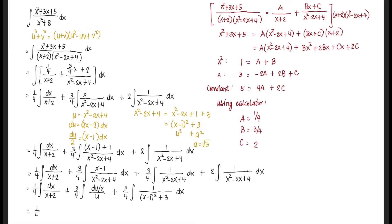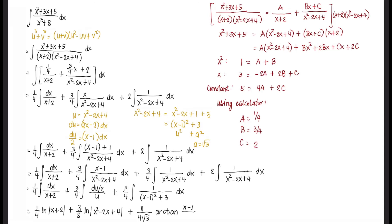Integrating, that gives one-fourth ln|x plus 2| plus three-eighths ln|x squared minus 2x plus 4| plus eleven over four square root of 3 times arctan of (x minus 1) over square root of 3, plus C. And that is our final answer.